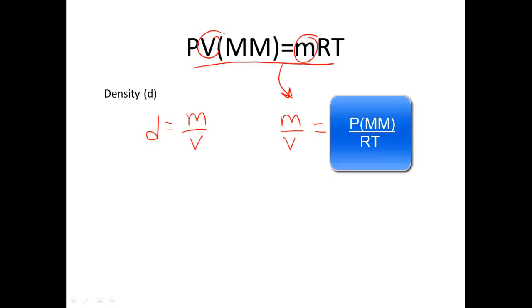So, when we rearrange that all, we substitute d in for m over v, you get this equation. The pressure times the molar mass equals your density times your gas constant and your temperature. Or, as I like to call it, PIM dirt.